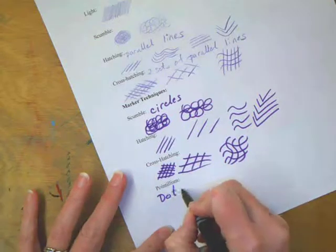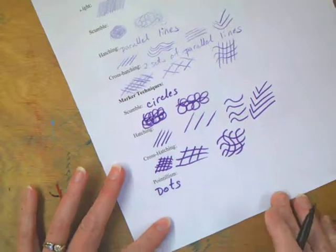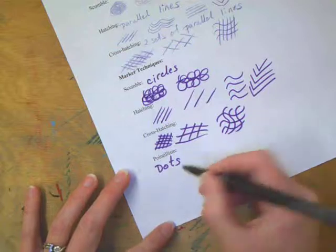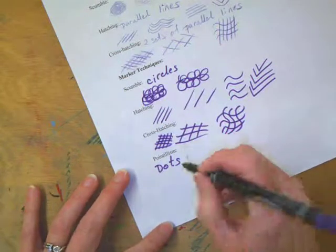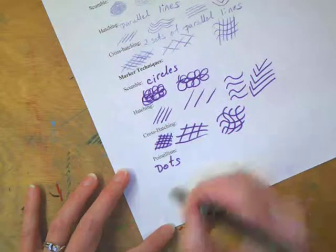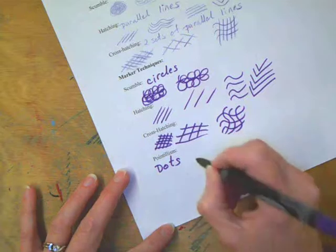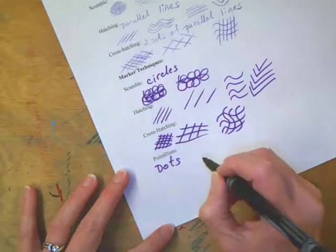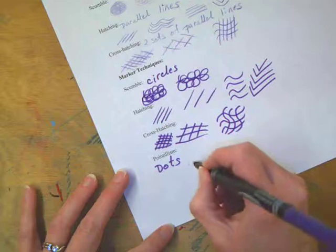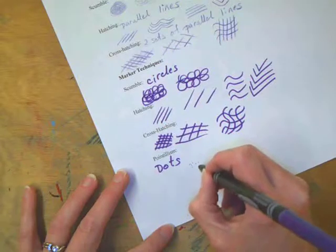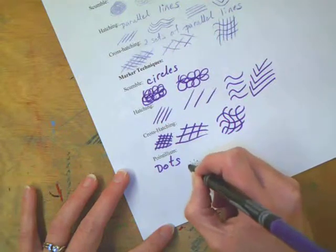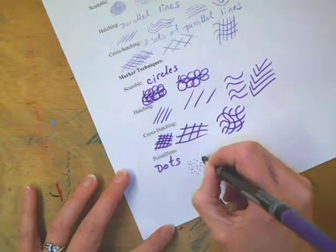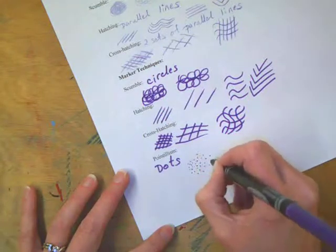Pointillism. Pointillism is a bunch of dots. Now when you go to do pointillism, you don't want to smash your tips. So instead of raising my whole arm to make my dots, I'm just going to lift my hand just a little bit. I'm bending my wrist, and I'm just going to give it a light tap.